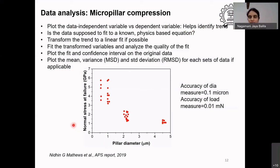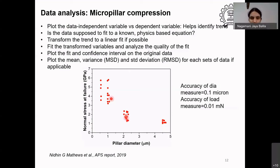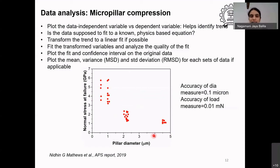Now we plot yield strength at different diameters — the independent variable is the specimen size and the dependent variable is the elastic limit or yield strength. Once you plot the raw data it helps you identify the trend. In this scatter plot, each data point is represented. You can count the number of measurements: at about 4.5 microns there are about 8 data points, and for each size we have at least about 6 to 12 measurements. The observations are: first, this is clearly not a linear trend.